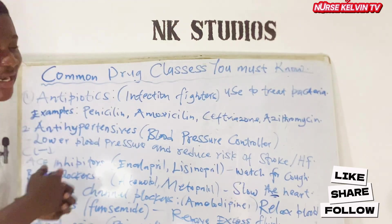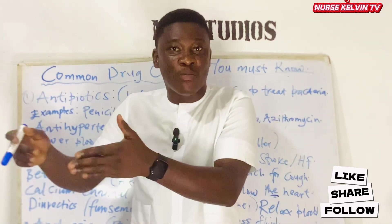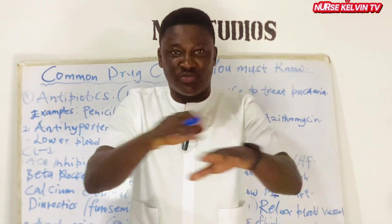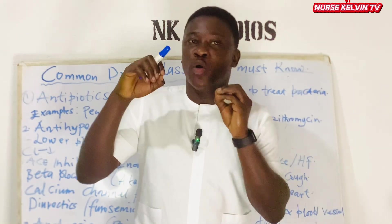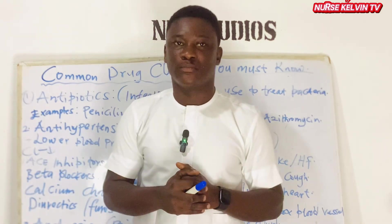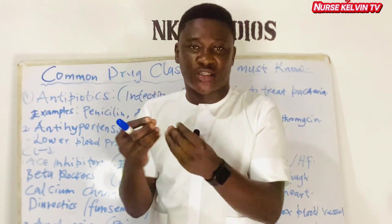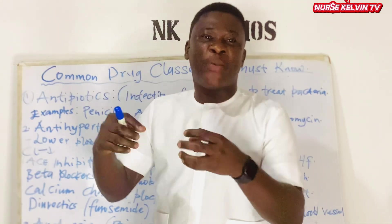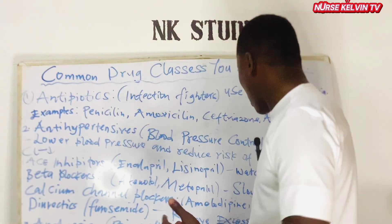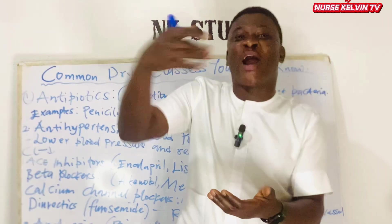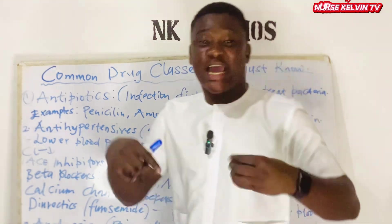Next, let's talk about analgesics. These are very common medications — they are pain medications or pain relievers. They are the class of drugs used to relieve pain. Under this class, we have paracetamol for mild to moderate pain. When the pain is severe, you can give stronger medications like tramadol or morphine. These are all under the analgesics class of drugs.